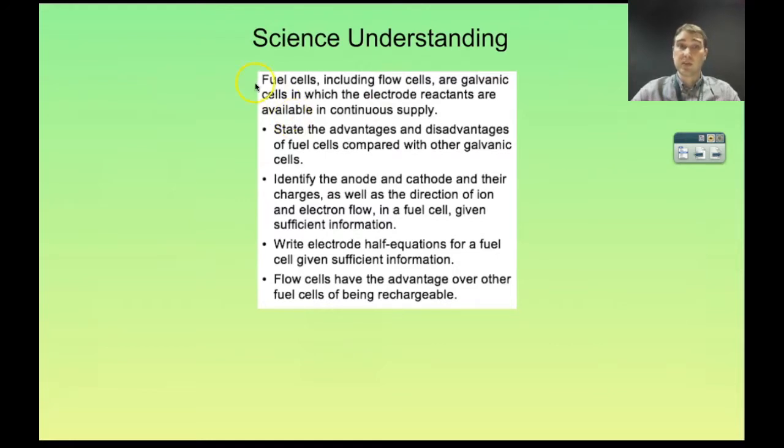So science understands what we're going to look at. Fuel cells, including flow cells, are galvanic cells in which the electrode reactants are available in continuous supply. We'll examine certain advantages and disadvantages of fuel cells compared to other galvanic cells.